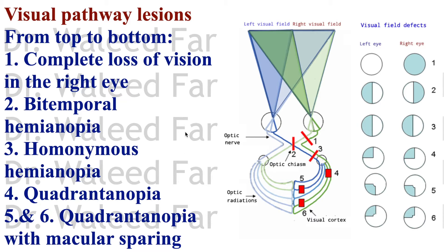Some lesions of the visual pathway — involving the optic nerve, optic chiasm, optic tract, lateral geniculate nucleus, and optic radiation: Lesion 1 is complete severing of the optic nerve, leading to total blindness in the affected eye (in this case, the right eye), with complete loss of vision.